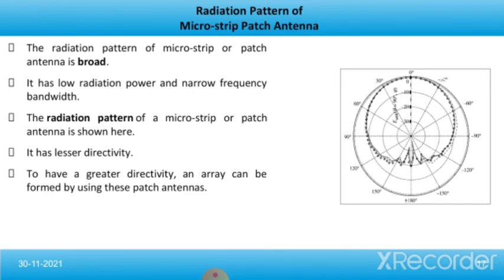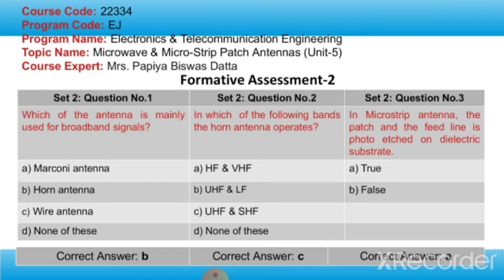Now we will talk about the radiation pattern of microstrip patch antenna. The radiation pattern of a microstrip or patch antenna is broad, with low radiation power and narrow frequency bandwidth. It has lesser directivity. To have greater directivity, an array can be formed by using these patch antennas. Now let's answer these questions: Which antenna is mainly used for broadband signals? In which frequency bands does the horn antenna operate? And in microstrip antenna, is the patch and feed line photo-etched on a dielectric substrate — true or false?